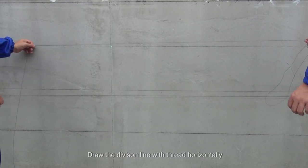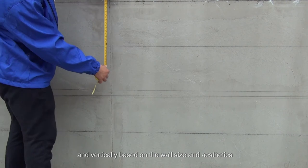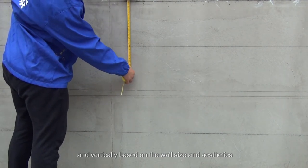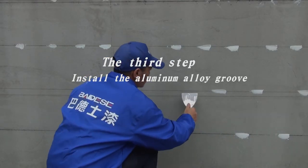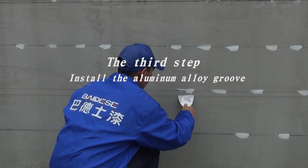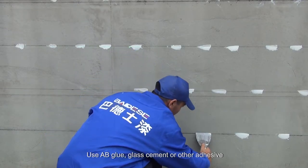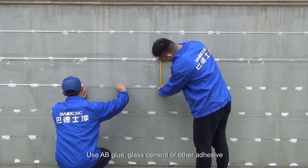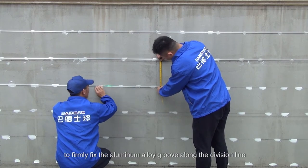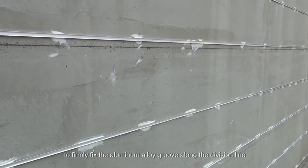The third step: install the aluminum alloy groove. Use AB glue, glass cement, or other adhesive to firmly fix the aluminum alloy groove along the division line.